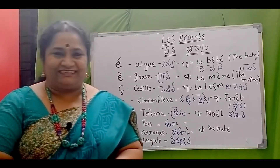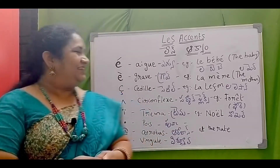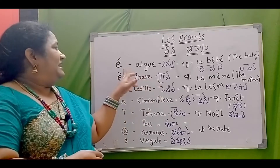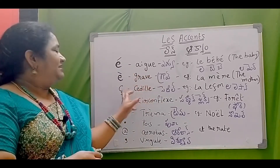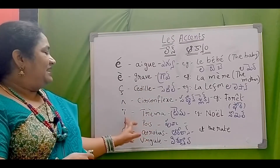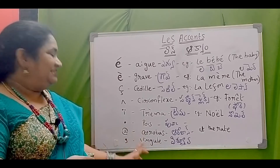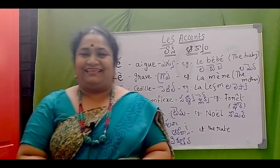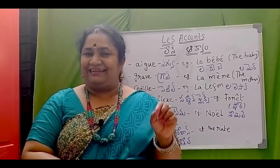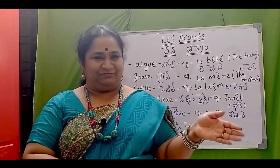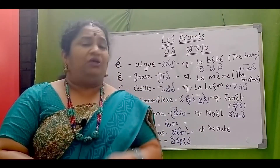So this is all about the accents and punctuation in French. Once again: accent aigu, accent grave, cédille, circumflex, tréma, point, arrobas, virgule. Practice well — like, share, subscribe. Until next week, au revoir!